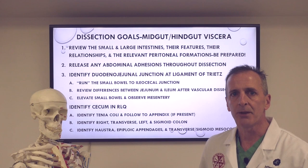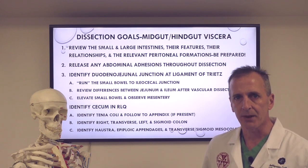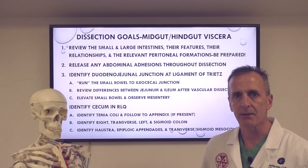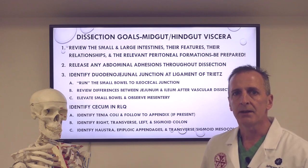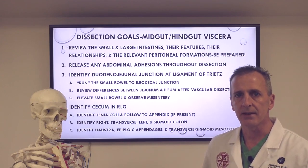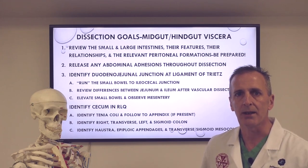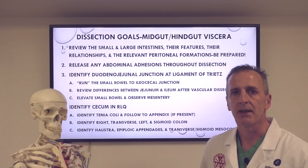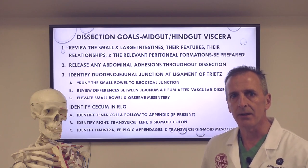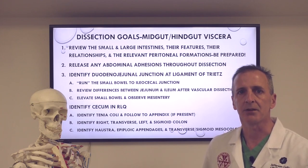Once you've run the small bowel and appreciated the mesentery, move down to the right lower quadrant and identify the blind-ended pouch that marks the beginning of the large intestine — this will be the cecum. On the cecum, identify the condensed longitudinal bands of smooth muscle known as the taenia coli, and you can follow these retrograde to identify the appendix if present. The appendix is attached to the base of the cecum and the three taenia coli all converge at the appendix — it's a good way to find it.